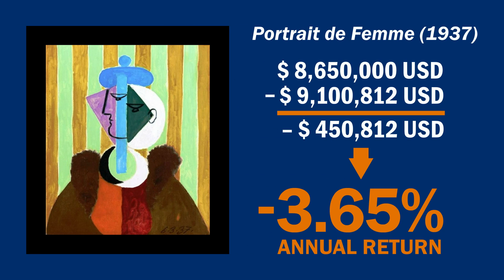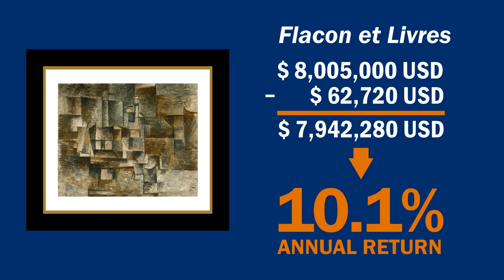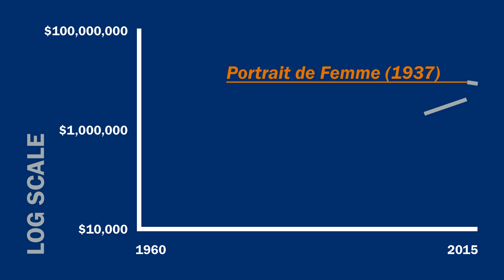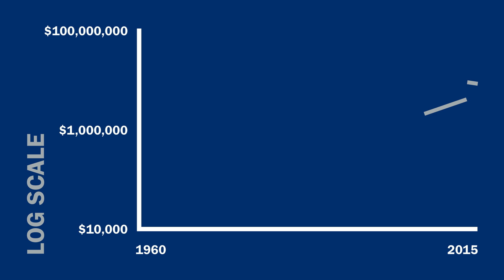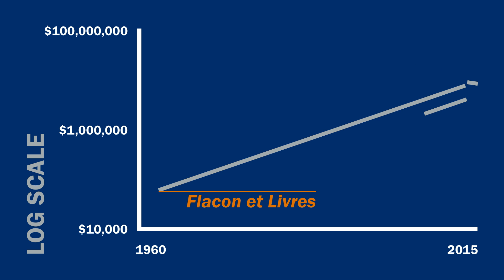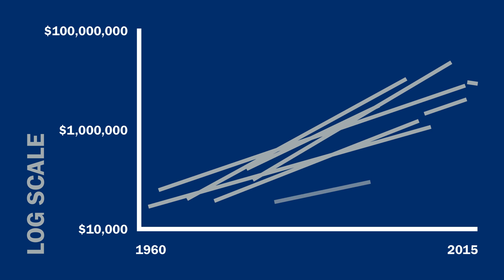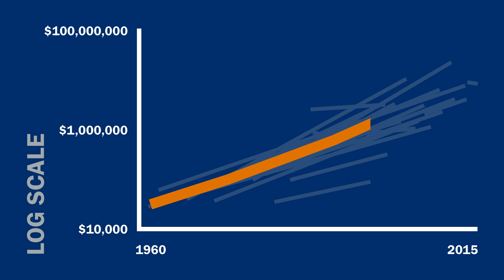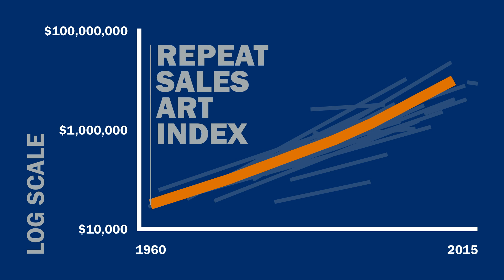We then repeat the process for additional Picasso paintings purchased and sold at auction over the last few years. First, let's plot the return for the 2009–2014 repeat sale pair for Femme au Chapeau. Then let's add a second Picasso painting that was purchased in 2014 and actually sold at a loss in 2015, and a third Picasso painting that was held for over 50 years and appreciated substantially over that time. Plotting 20 of these repeated sales pairs, by aggregating information over many repeat sale pairs, we can estimate the average return in the market as a whole in each year — and we have the Repeat Sales Art Index.